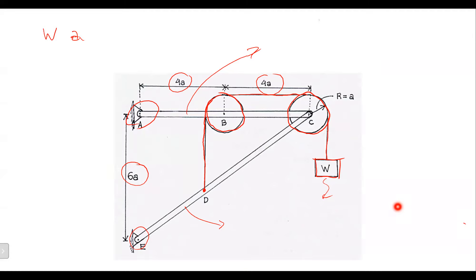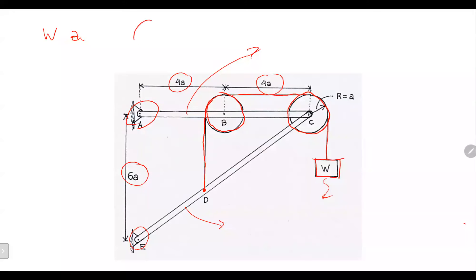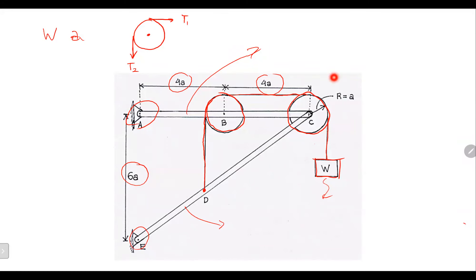For example, we have pulley B. At pulley B, there is a force going down and a force going to the right — both are T, or we can call them T1 and T2. At point B, there is a pin, which gives a reaction force.